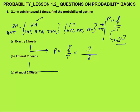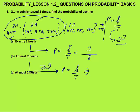At least two heads — what does it mean? It means that two or more than two heads will be the favorable case. At least means minimum two heads will be there, maximum could be three. So at least means two or more than two heads. Probability is favorable by total. We have four cases with two or more heads: three cases of two heads and one case of three heads. So probability is 4 by 8, which is 1 by 2.